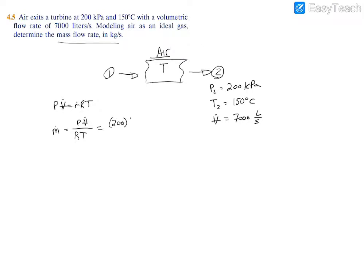The volumetric flow rate is given in liters per second, so we have to convert that into SI to make it compatible with the kilopascals. We just convert that into 7 meters cubed per second, so times 7.